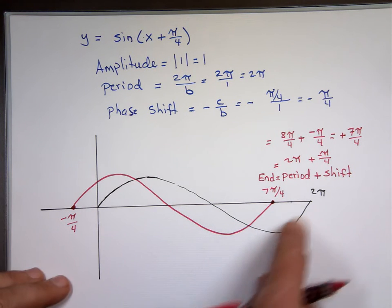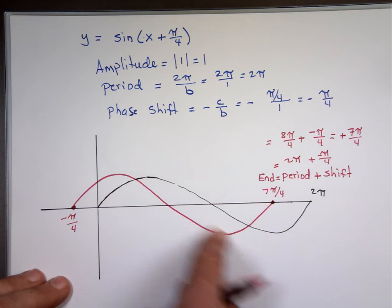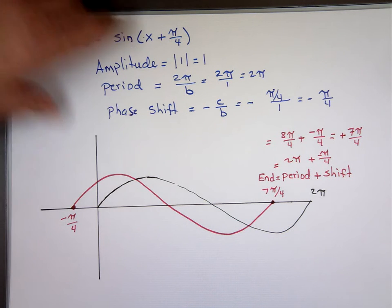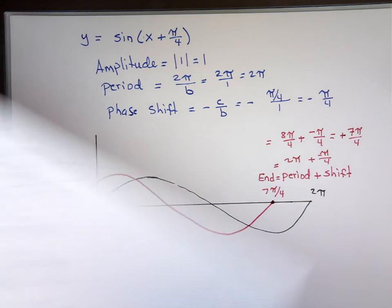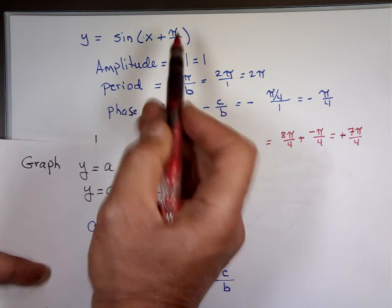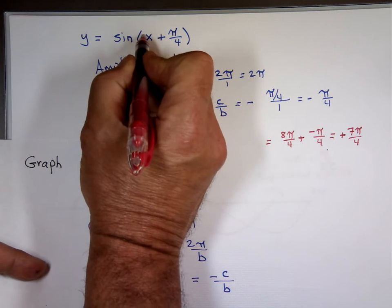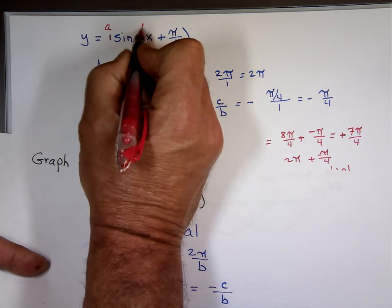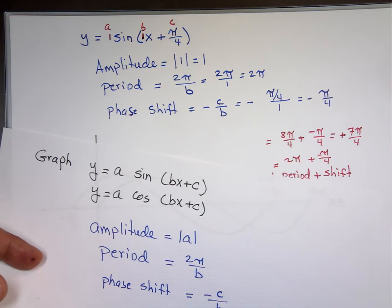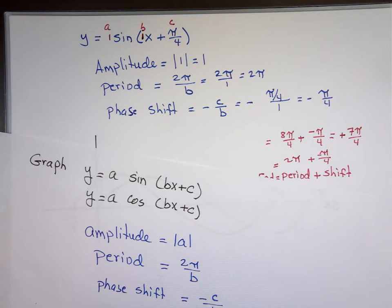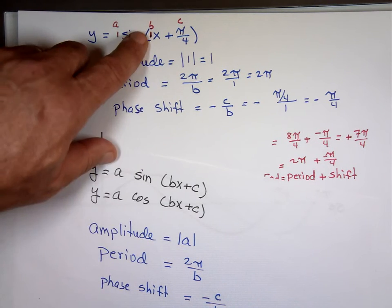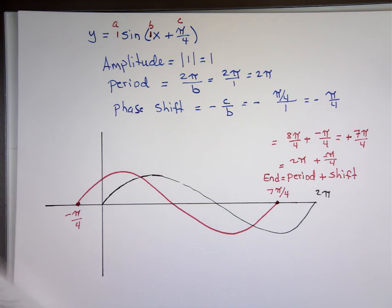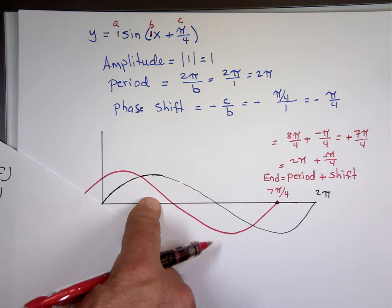From now on I'll bypass showing the basic function and just show the final graph. Ricardo asks: where did you get the value for C? C is this number in the standard form. So in this example, that's my C, and this is B — there's a 1 here. A is 1, that's why the amplitude is 1. The period: if it's 2π over B and B is 1, that's 2π. The shift is negative C over B. If it's negative, it starts on the left side; if it's positive, it starts on the right side of the shift.